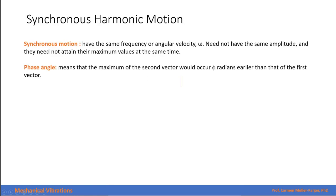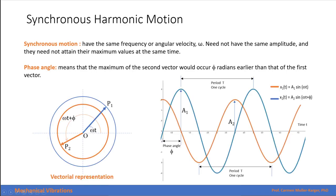When we talk about synchronous harmonic motion, it means that two motions have the same frequency or angular velocity. There is no need for them to have the same amplitude, and no need for them to attain their maximum values at the same time, so they can have a phase angle between them. The phase angle means the maximum of the second vector occurs phi radians before the first vector.